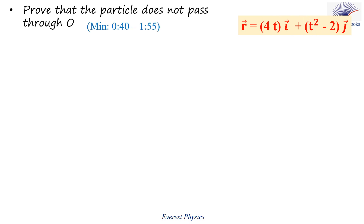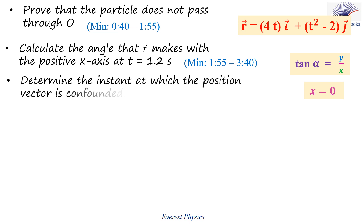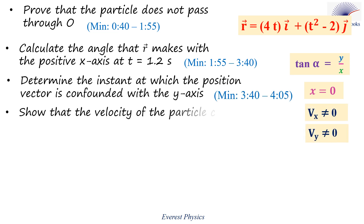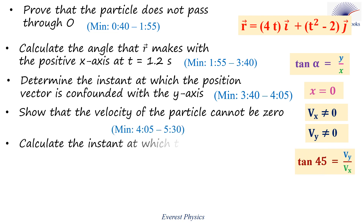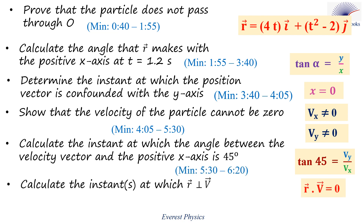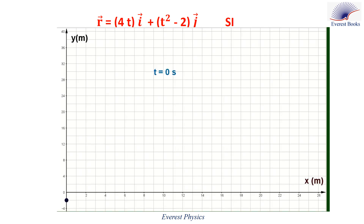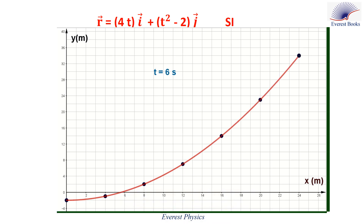This exercise is about a particle moving on a curved path. We are going to prove that the particle does not pass through the origin of coordinates; calculate the angle that the position vector makes with the positive x-axis at time 1.2 seconds; determine the instant at which the position vector is confounded with the y-axis; show that the velocity of the particle cannot be zero; calculate the instant at which the angle between the velocity vector and the positive x-axis is 45 degrees; and calculate the instant at which the position vector is perpendicular to the velocity vector. The position vector of a moving particle M in the x-y plane is given by 4ti plus (t squared minus 2)j in SI units. This animation shows the trajectory of M during the first 6 seconds.